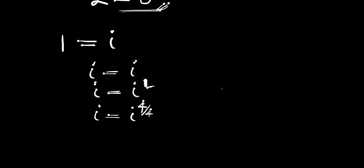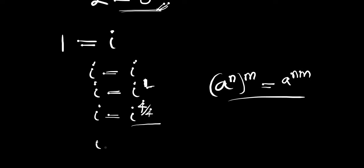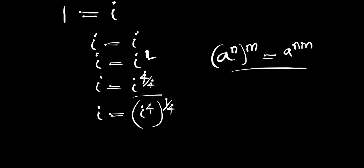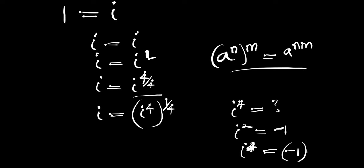So from here we make use of this identity: if you have a to the power of n to the power of m, this equals a to the power of n times m. Applying this identity here, we can have i equals i to the power of 4, all to the power of 1 divided by 4. Now what is i to the power of 4? Since i squared equals negative 1, then i to the power of 4 equals negative 1 to the power of 2, which equals positive 1.